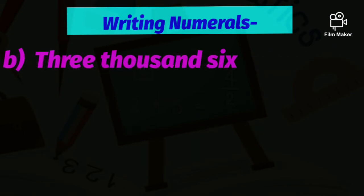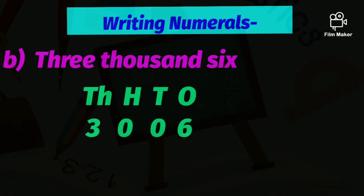Next, the number name is three thousand six. We write the places: thousands, hundreds, tens, ones. Three thousand goes in the thousands place; hundreds and tens are zero, so we write zero there; and six goes in the ones place. The numeral becomes 3006.